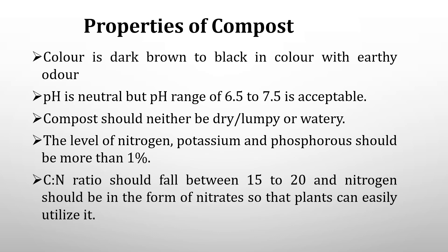Properties of compost: Color is dark brown to black with an earthy odor. pH is neutral, but a pH range of 6.5 to 7.5 is acceptable. Compost should neither be dry, lumpy, nor watery. The level of nitrogen, potassium, and phosphorus should be more than 1%. The carbon to nitrogen ratio should fall between 15 to 20, and nitrogen should be in the form of nitrates so that plants can easily utilize it.